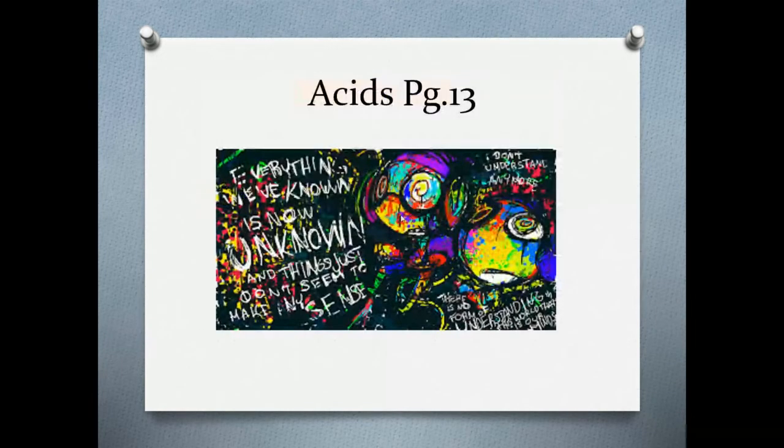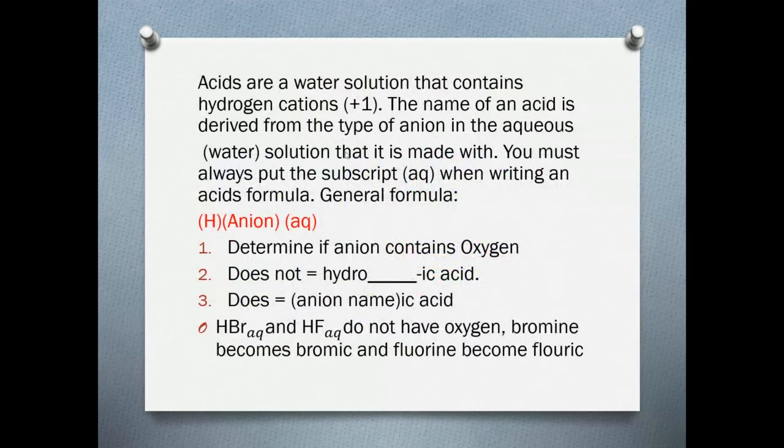We're going to start out here with acids. Acids are a water solution. All acids are typically liquids. Some kind of an ion dissolved in a water solution that contains hydrogen cations. This is the big rule. Acids are a water solution that contain hydrogen cations. Whatever it is combined with, it must have hydrogen cations, so that's hydrogen with a plus one charge. The name of the acid is derived from the type of the anion that is in the aqueous solution or the water solution that it's made with.